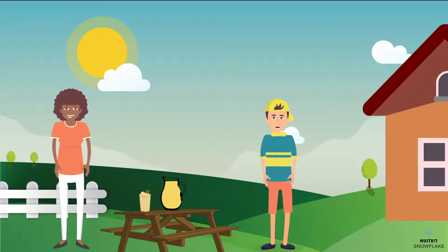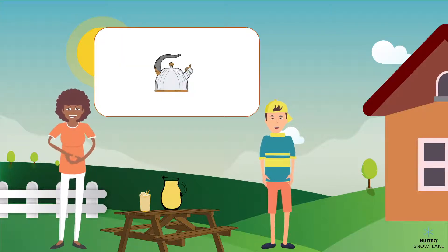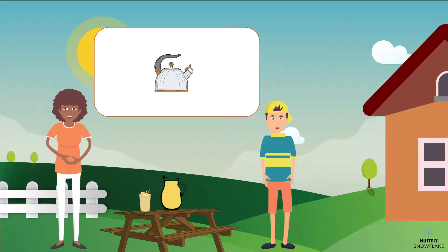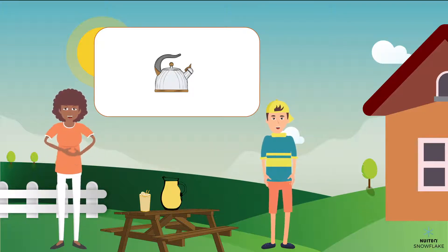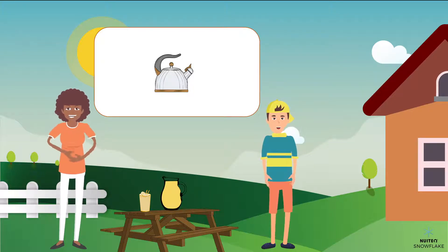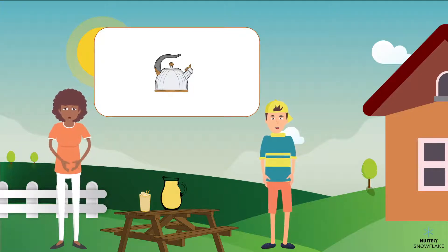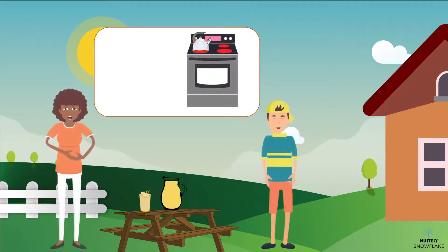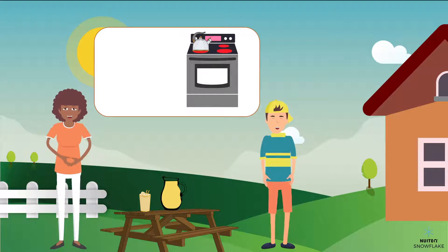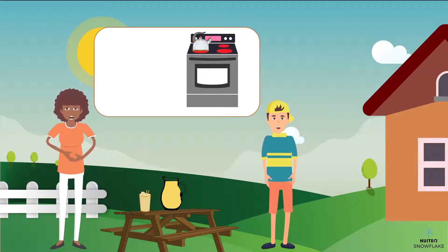But how does the heat get into the tea to begin with? To make tea, you have to boil some water. There are different ways to boil water, but I usually boil water for my tea in a tea kettle. But in order for water to start boiling, some heat energy needs to be transferred to it. I put the kettle on the stove. The stove needs to get really hot, and then transfer its heat to the water in the kettle.